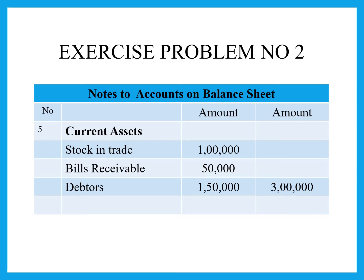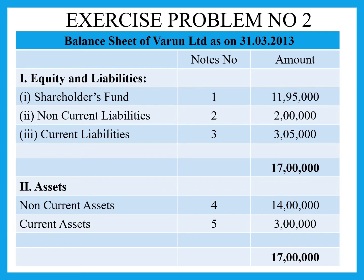Totaling current assets, we get 3 lakh rupees. Now for the grand total balance sheet: on the liabilities side — shareholders fund (working note 1) is 11 lakh 95,000 rupees, non-current liabilities (working note 2) is 2 lakh rupees, and current liabilities (working note 3) is 3 lakh 5,000 rupees — giving a total of 17 lakh rupees. On the assets side — non-current assets (working note 4) is 14 lakh and current assets (working note 5) is 3 lakh rupees — also totaling 17 lakh rupees. Therefore, the assets and liabilities are balanced.